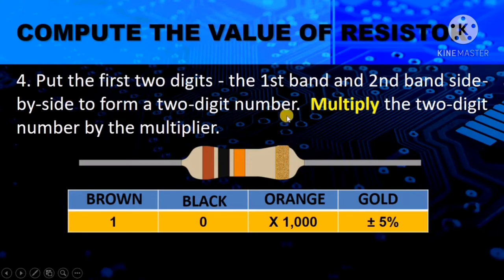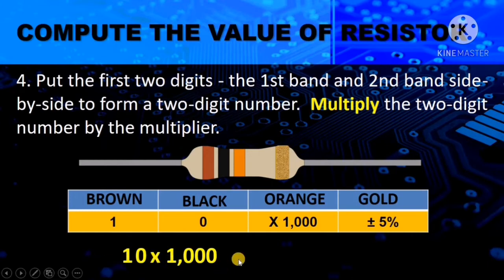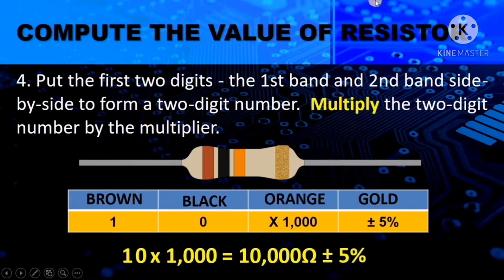Put the first two digits together — the first band and the second band side by side to form a two-digit number. Multiply the two-digit number by the multiplier. So 1 and 0 put together becomes 10. Multiply that by 1,000 — the answer is 10,000 ohms plus or minus 5%. So for brown, black, orange, gold, the value would be 10,000 ohms plus or minus 5%. Let's simplify this one.